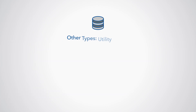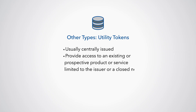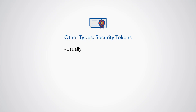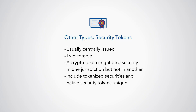And third, there are the rest. Utility tokens are crypto tokens, usually centrally issued, and provide the token holder access to an existing or prospective product or service. These are generally limited to a single network — that is the issuer — or a closed network linked to the issuer, and have limited transferability. Security tokens are crypto tokens that are usually centrally issued and transferable, and meet the definition of a security within respective jurisdictions. A security token in one country could be a stablecoin or unbacked crypto in another. They include tokenized securities, as well as native security tokens unique to the blockchain.